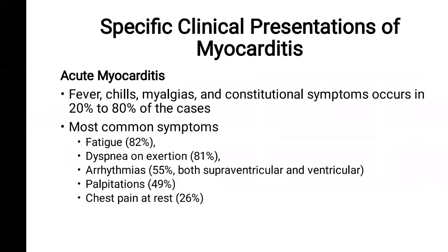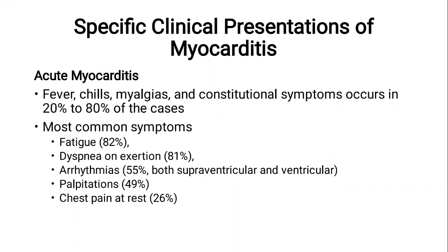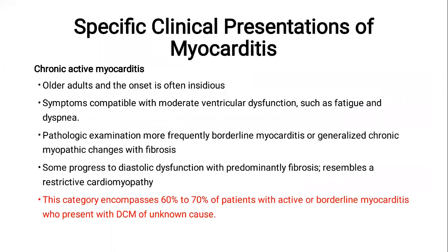Specific clinical presentations of myocarditis: acute myocarditis presents with constitutional symptoms of fever, chills, myalgia, and most commonly dyspnea, arrhythmia, palpitation, or chest pain. In chronic active myocarditis, which encompasses 60 to 70 percent of patients with active or borderline myocarditis, patients present with dilated cardiomyopathy. These are usually older patients — due to tolerance of the immune system, the symptoms and cardiac dysfunction are moderate. They slowly progress to diastolic dysfunction due to predominance of fibrosis.